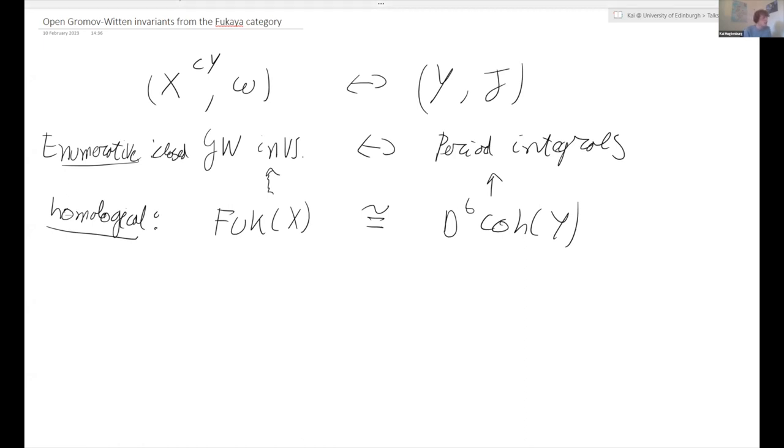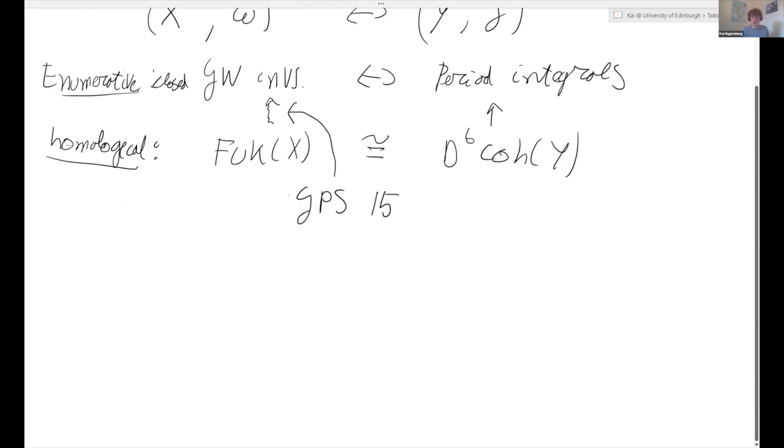So in that sense, it's a very nice result. Let me say about this, that in determining closed Gromov-Witten invariants from the Fukaya category, this was done by Ganatra, Perutz, and Sheridan's work announced in 2015. Unfortunately, it's not yet out in the archive. Hopefully at some point. On the B side, I won't say anything about it, how you can obtain period integrals from the category of coherent sheaves. This is an old story about closed Gromov-Witten invariants.